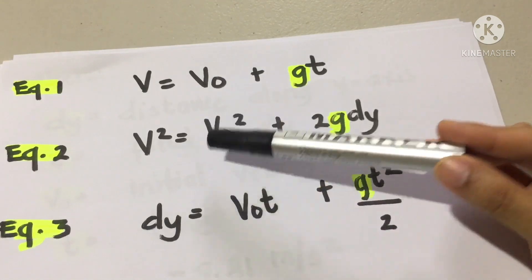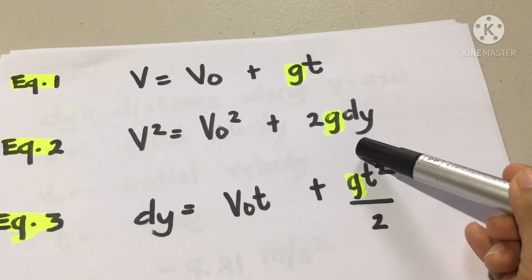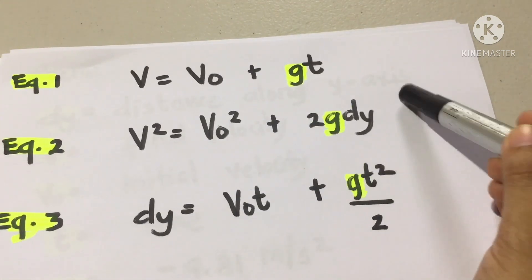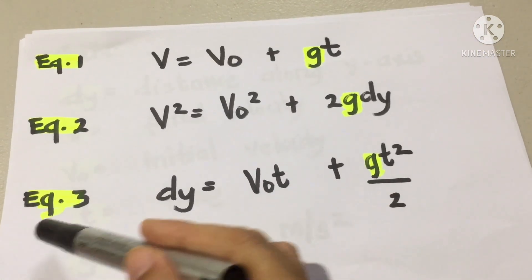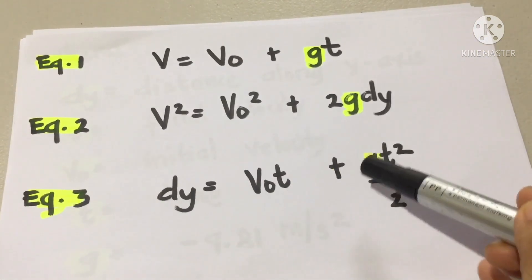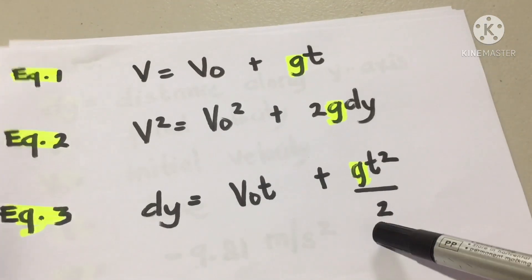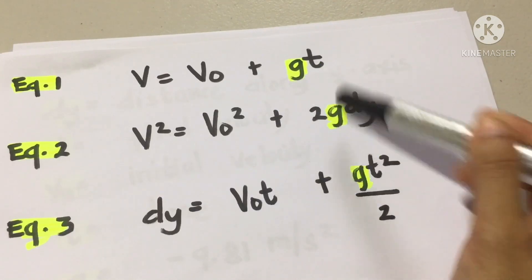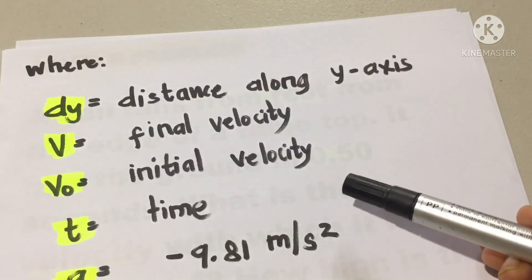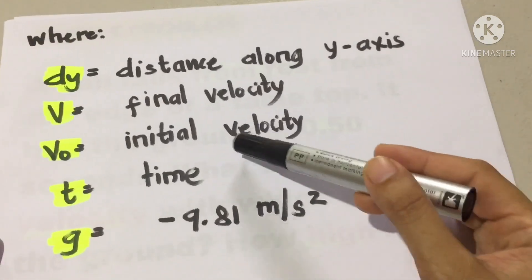Still, our equation number 1 is velocity is equal to V₀ plus GT. G, that's gravity. Equation number 2, V squared is equal to V₀ squared plus 2G∆Y. Why ∆Y? Because we are now in the vertical dimension, vertical Y. ∆Y for our equation number 3, ∆Y is equal to V₀T plus GT squared over 2. So the gravity is constant. What is the value?